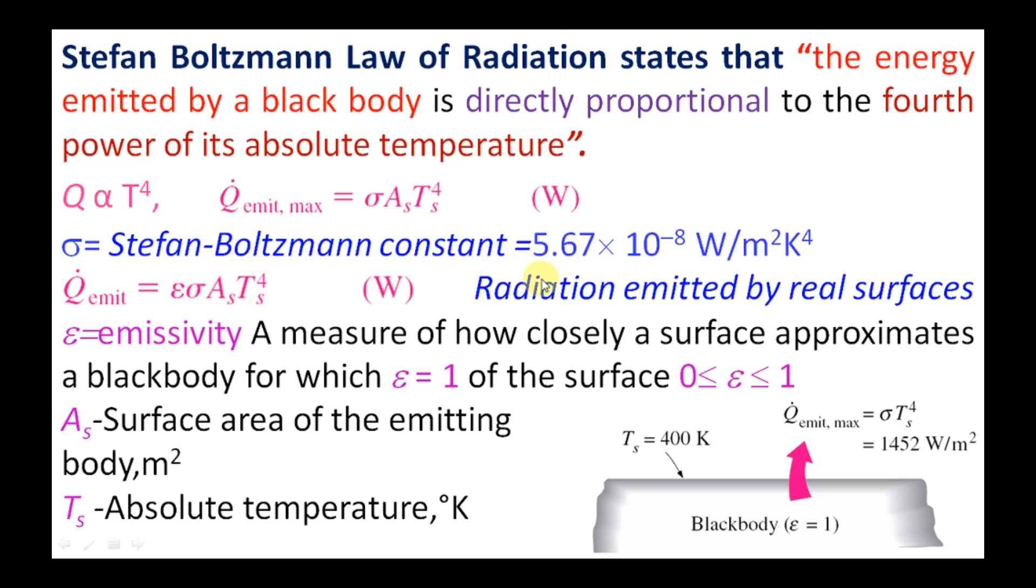And σ is the Stefan-Boltzmann constant, that is 5.67 × 10⁻⁸ W/m²K⁴. And here for the actual surfaces we can write Q_emit = εσA_sT_s⁴. This is radiation emitted by the real surfaces.